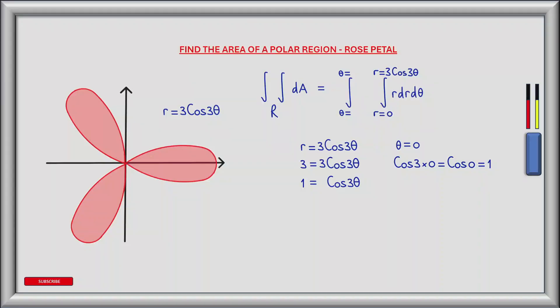Using this knowledge we can work out the limits of theta. Our polar curve is r equals 3 times cos 3 theta, and the polar curve starts where r is equal to 3. Substituting r equals 3 we have 3 equals 3 cos 3 theta. Dividing both sides by 3 we have 1 equals cos 3 theta. When theta equals 0, the cosine of 3 times 0 is the cosine of 0, which gives us 1 and therefore satisfies this equation.